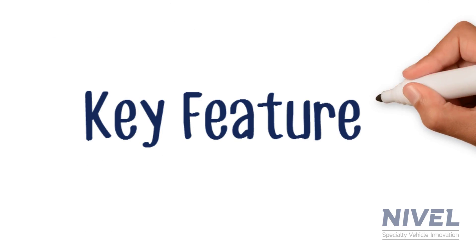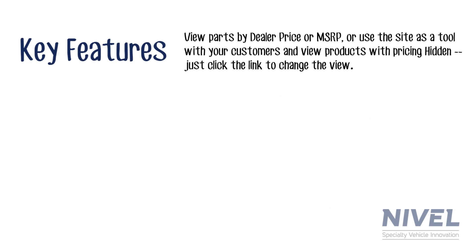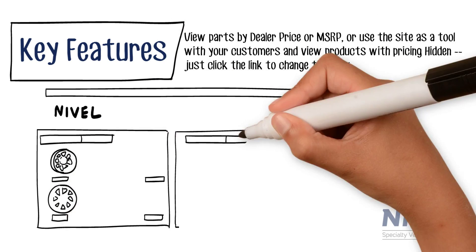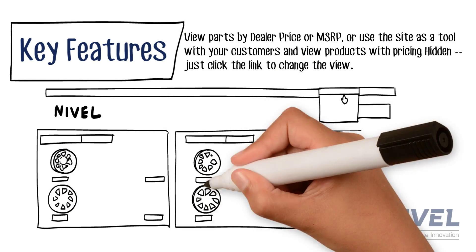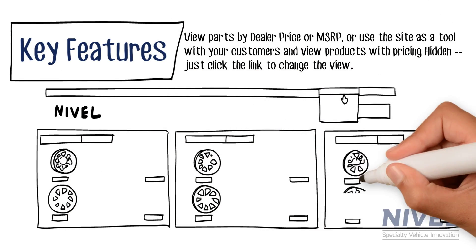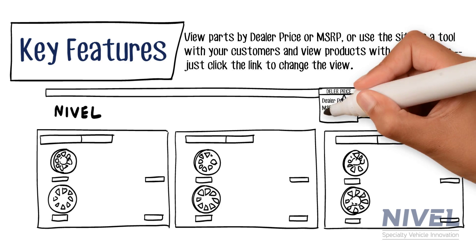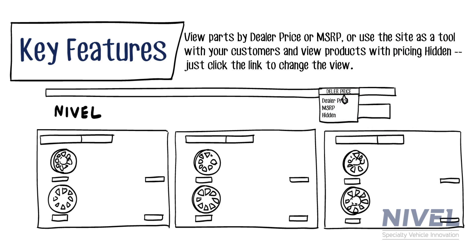Key Features: View parts by dealer price or MSRP, or use the site as a tool with your customers and view products with pricing hidden. Just click the link to change the view.